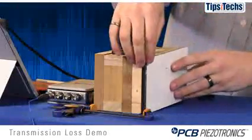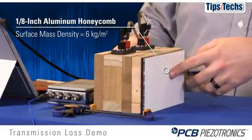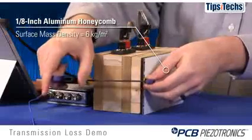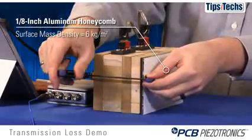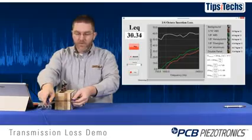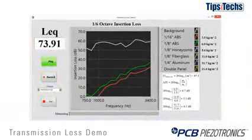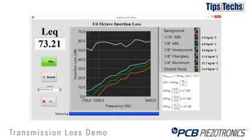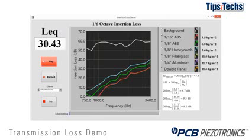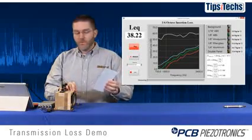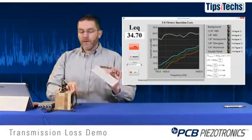Next we'll try an aluminum honeycomb material. This is also 1/8-inch thick and it's almost the same surface mass density as the last ABS plastic we used. But it's a double panel design with little air gaps in the honeycomb lattice. The mass law would tell us we should get the same insertion loss for the honeycomb material as the 1/8-inch ABS. As you can see, at low frequencies we get a slightly better insertion loss with the double panel material due to double panel transmission loss.